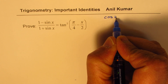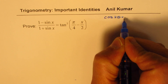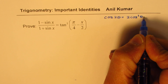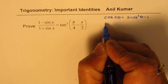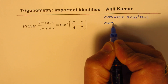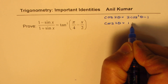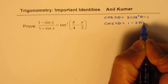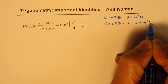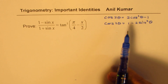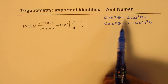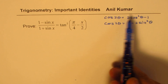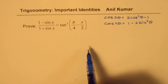We know cos 2θ is equal to 2 cos squared θ minus 1, and cos 2θ can also be written as 1 minus 2 sin squared θ. This formula can actually convert x into x by 2, and that will be utilized.